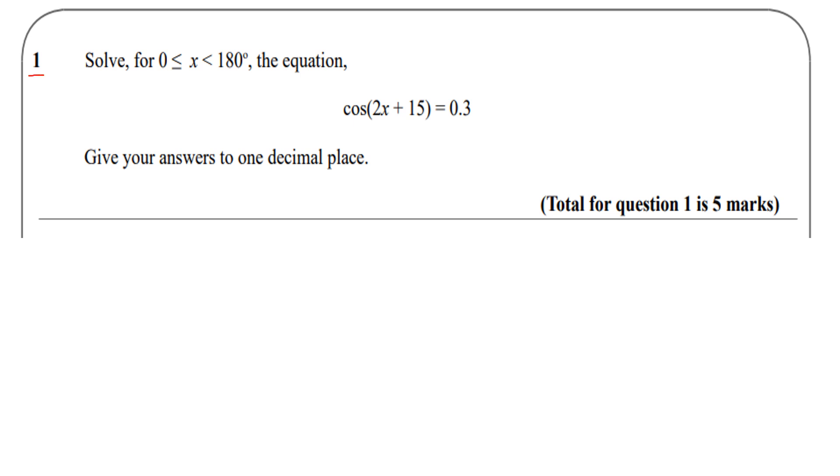Question number one says solve for 0 ≤ x < 180° the equation cos(2x + 15) = 0.3. Give your answer to one decimal place.